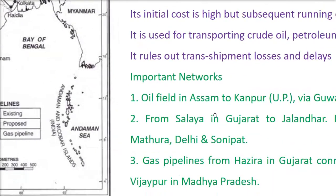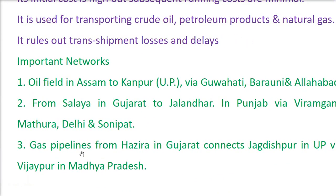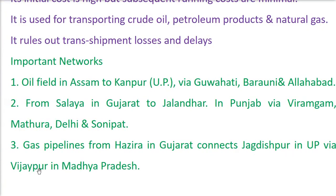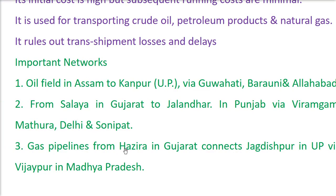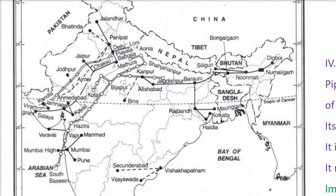The third and most important one is the natural gas pipeline. It connects Hazira in Gujarat to Jagdishpur in Uttar Pradesh via Vijaypur in Madhya Pradesh. This is why it is called the HVJ pipeline — Hazira–Vijaypur–Jagdishpur. It starts from the Bombay High, and this is Hazira on the map, then goes to the places mentioned.